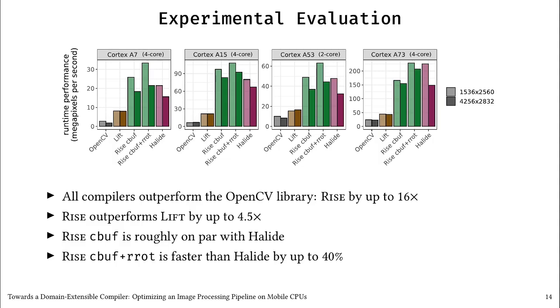RISE CBUF is on par with HALIDE, although there are some performance differences. This shows that when we apply the same coarse-grain optimizations, we obtain similar performance. RISE CBUF plus RROT is faster than HALIDE by up to 40%. We can really see how the additional register rotation optimization pays off on these mobile CPUs.